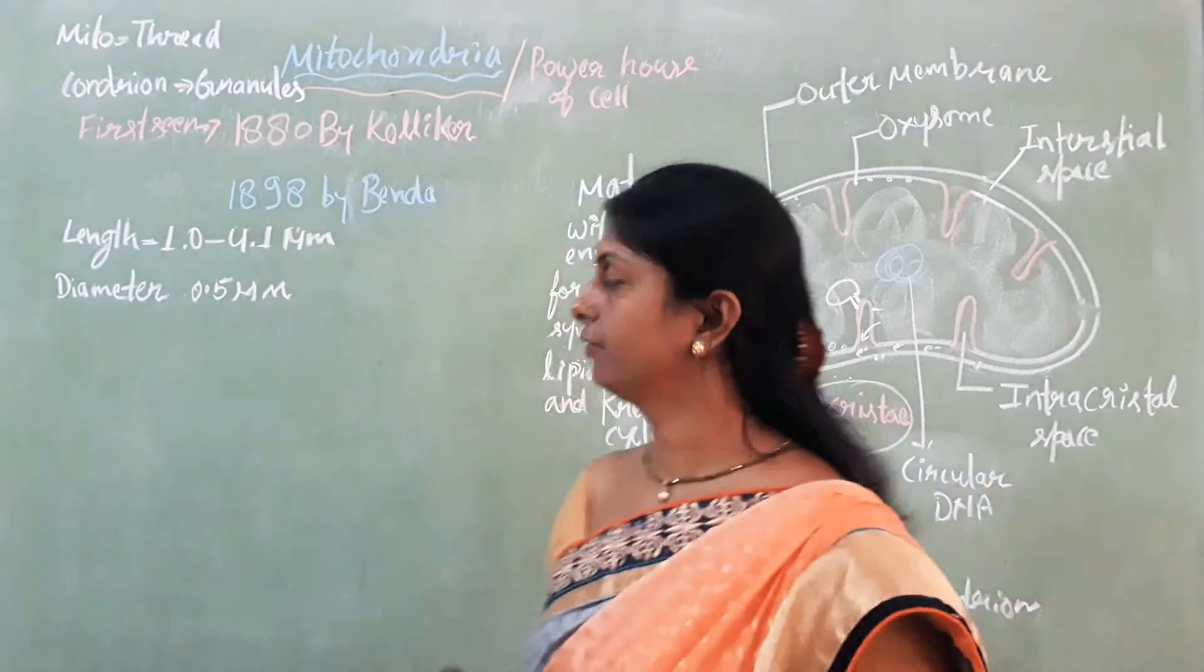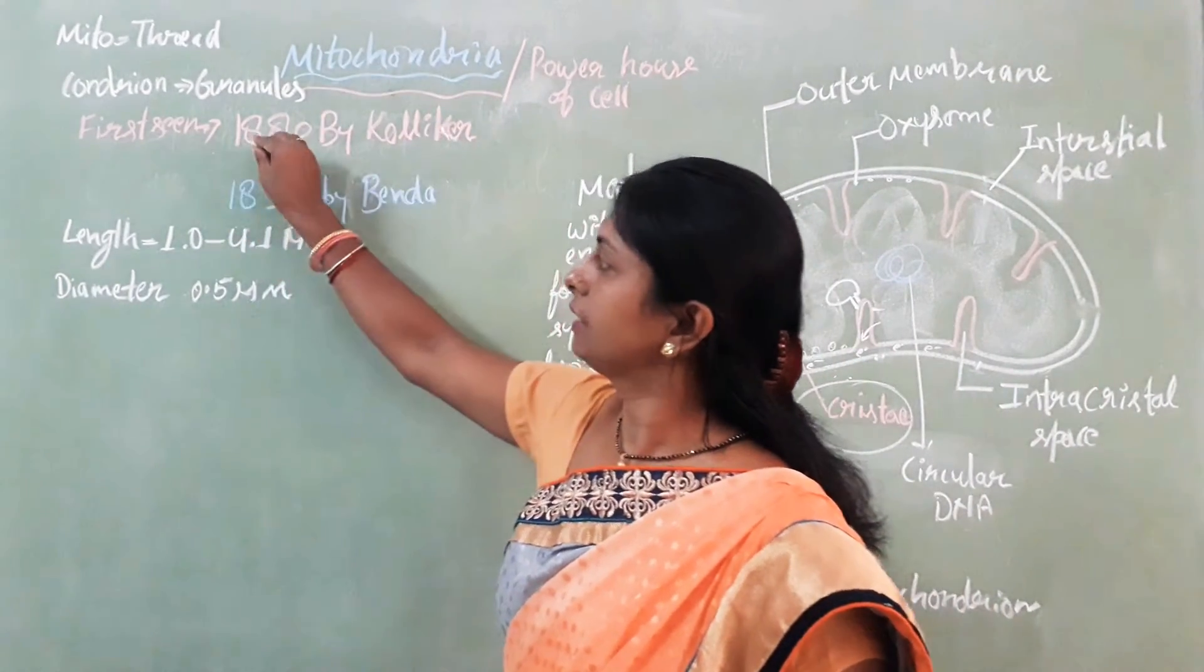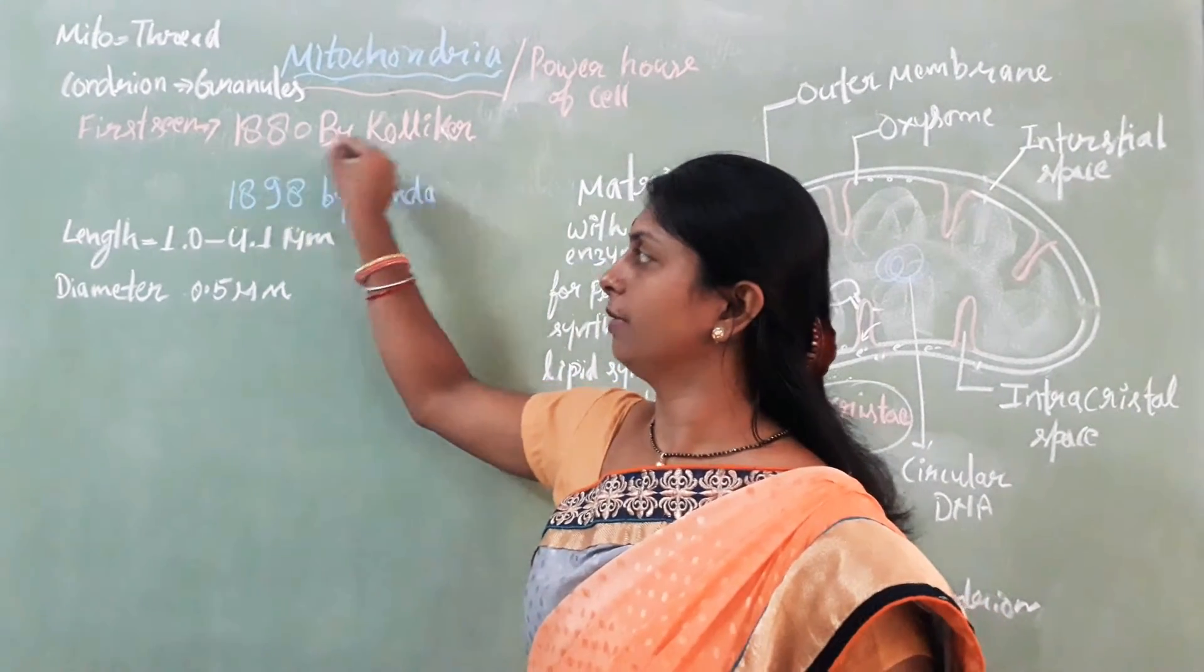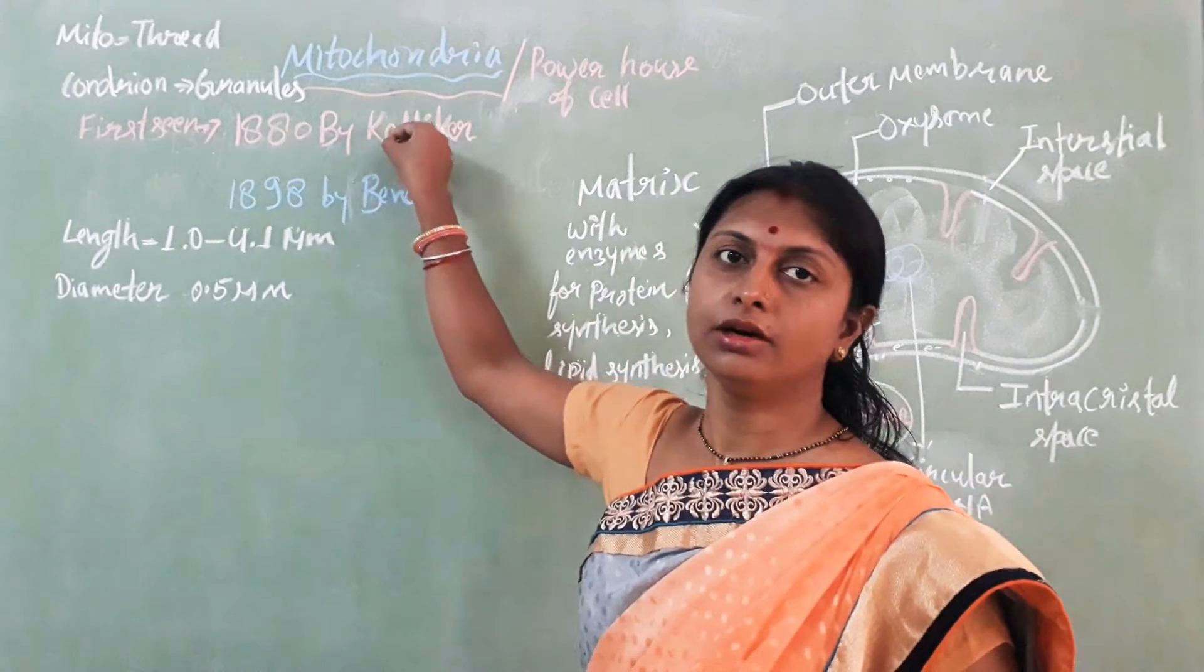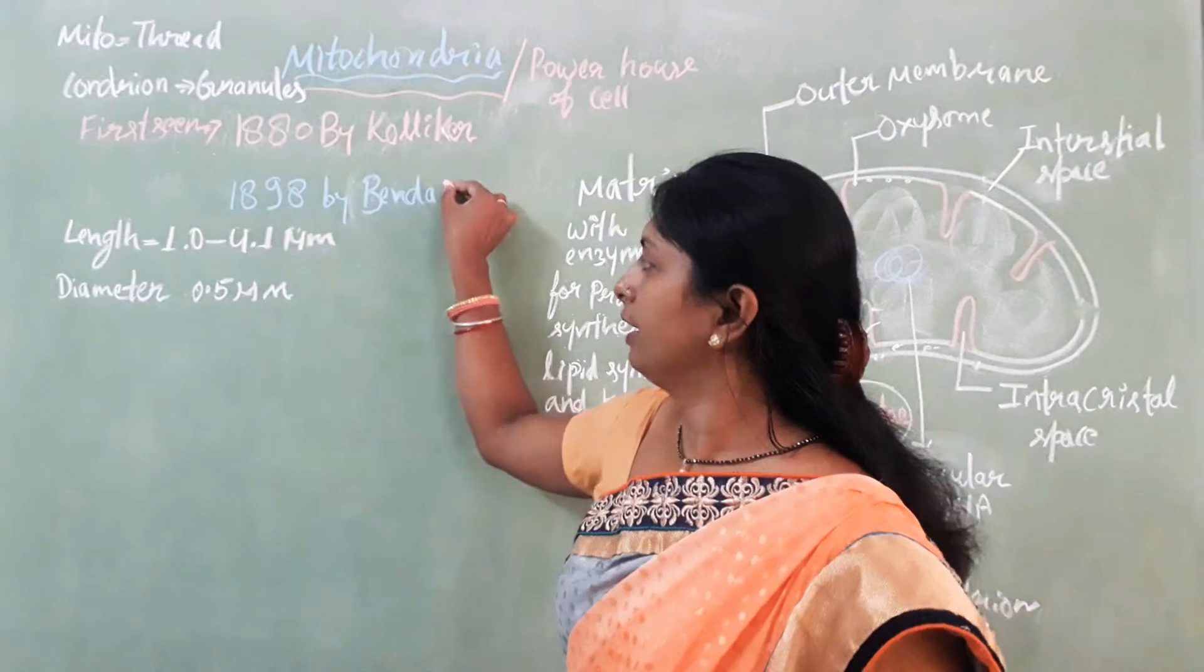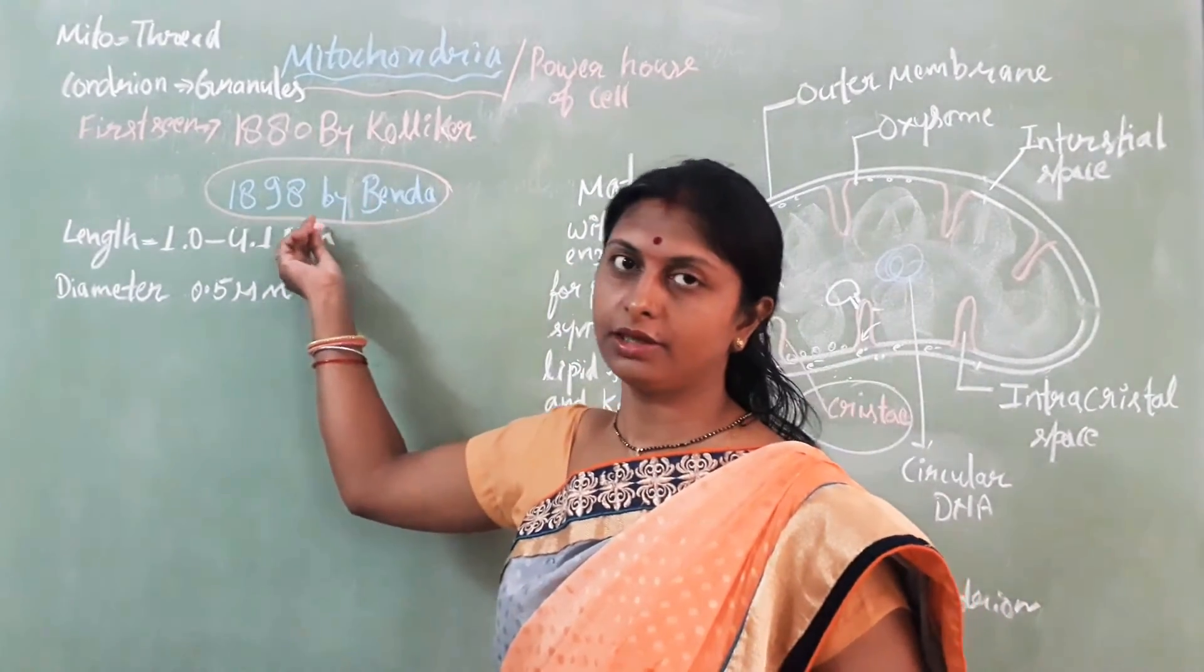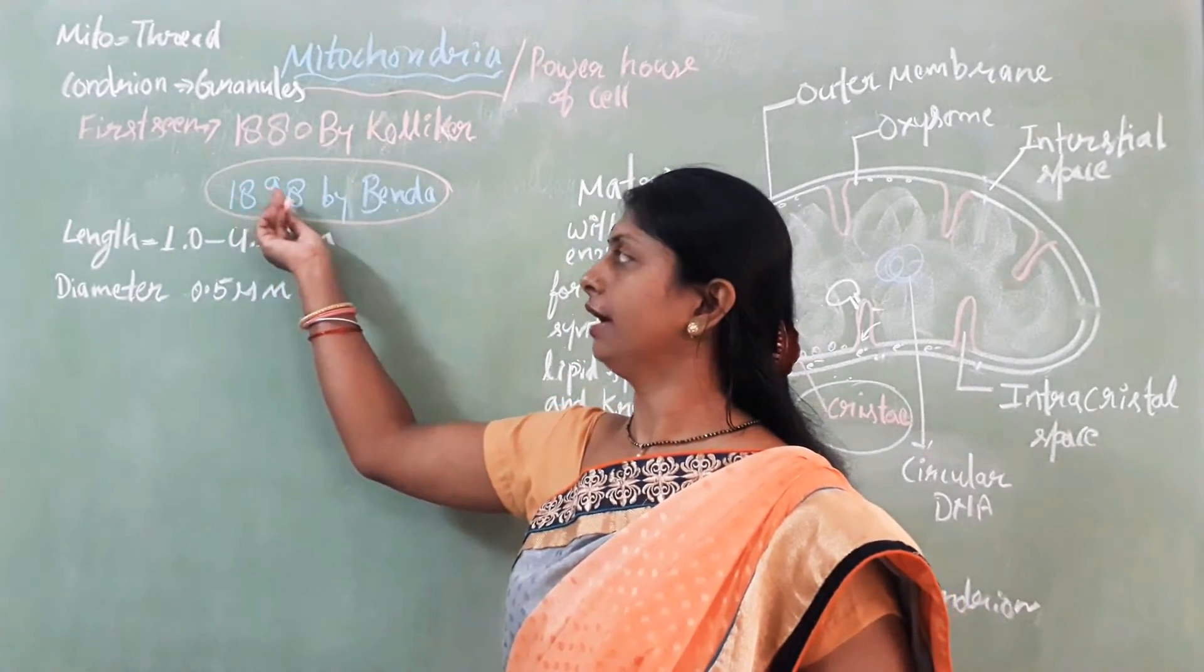Who discovered the mitochondria? In 1880, Kolliker first saw mitochondria in insect muscle. The name mitochondria was given by scientist Benda in 1898.